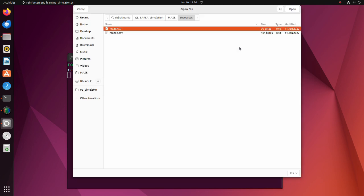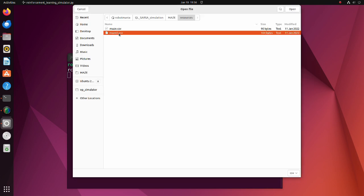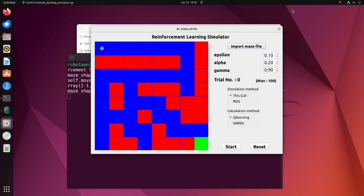Firstly, press the import maze file button, then open the resources folder and select one of the maze files. After a maze file is selected, it will be displayed in the simulation window.